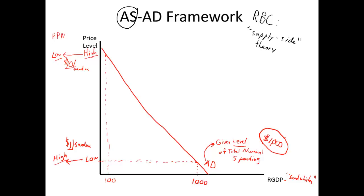So we're going to get 1,000 sandwiches for that same $1,000 worth of spending. This is what the aggregate demand curve is — it's just superimposing the level of total dollar spending, total nominal spending, onto the framework.